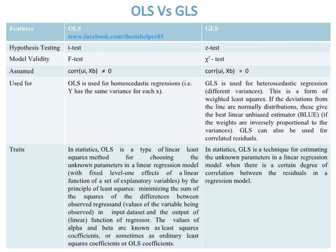GLS can also be used for correlated residuals. In statistics, OLS is a type of linear least squares method for choosing the unknown parameters in a linear regression model with fixed level-1 effects of a linear function of a set of explanatory variables, by the principle of least squares — minimizing the sum of squares of the differences between observed values and the output of the linear function of regressors. The values of alpha and beta are known as least squares coefficients, or OLS coefficients.